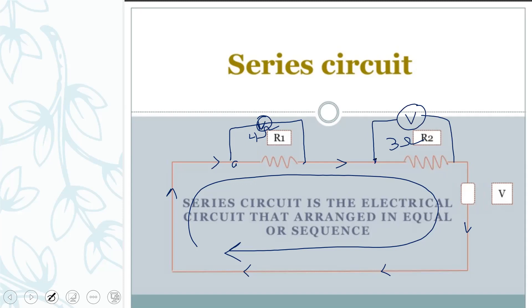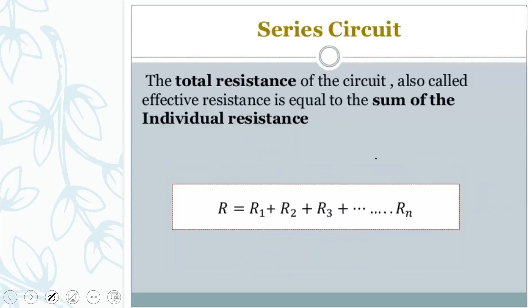When you bring the voltmeter, the voltage you measure on one resistance will be different from the voltage on another resistance. So the resistances are different and the voltages are different. If there is a gap, the circuit will not work. This is the definition of a series circuit.